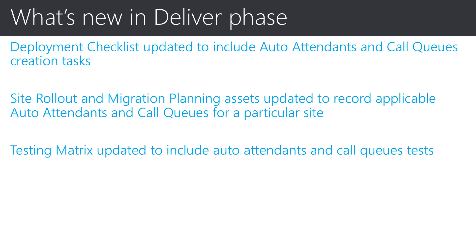Moving on, let's talk about the changes in deliver phase assets. In this release, deployment checklists, site rollout and migration planning assets, and testing matrices have been updated to guide the project team in implementing auto-attendance and call queues — from deployment and migration to testing. The updates can be considered minor; however, we expect they will help you be ready to deliver projects that have auto-attendance and call queues as part of the solution. I would recommend you download the latest SOF assets and see for yourself the changes made to incorporate auto-attendance and call queues as part of a SOF journey.